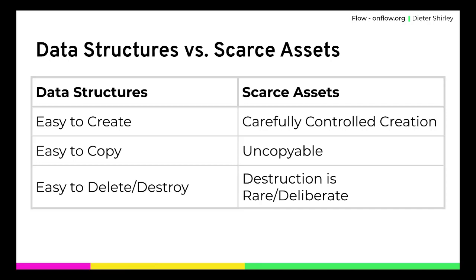Let's take a look at how we represent things in software as data structures and what properties we'd like to see in scarce digital assets. Data structures form the basis of how software works — when you're building any model inside a computer, you're using structured data. A lot of effort has gone into programming languages to make data structures easy to use: easy to create, easy to copy, and easy to get rid of. The easiest languages have reference counting or garbage collection, so when you're done with an object, the system automatically reclaims the memory.